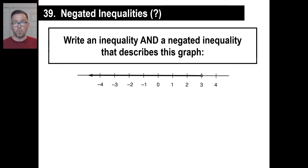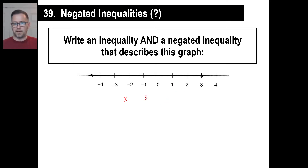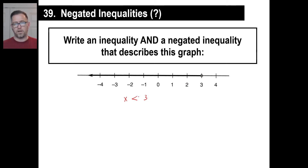How about this one? Let's go backwards. Give me an inequality and a negated inequality that describes this graph. Well, we can go ahead and just do the X and the 3. We know that X is — everything's going to be less than, right? But does it include 3? No, it's an open circle. So there's your regular inequality. The negated inequality is: it's not greater than or equal to 3. That's your negated inequality. Piece of cake.